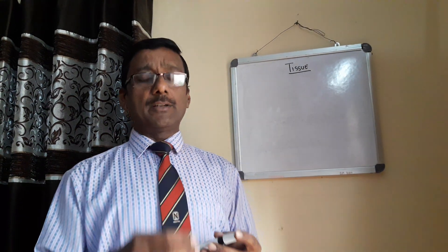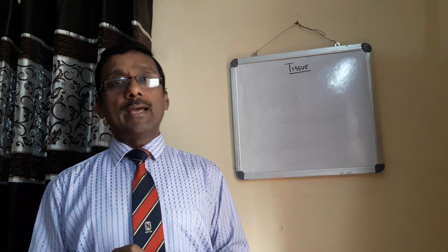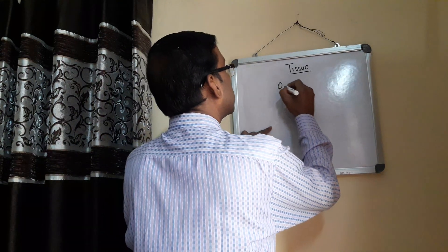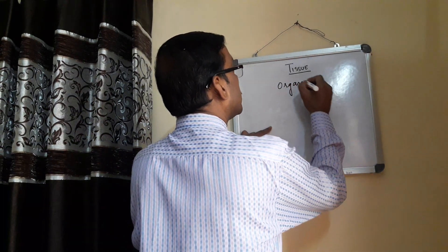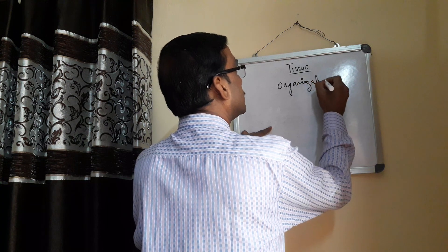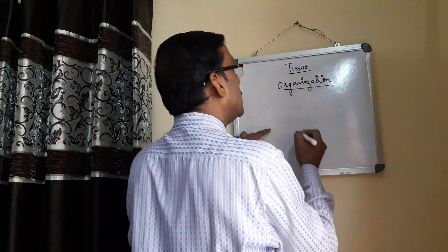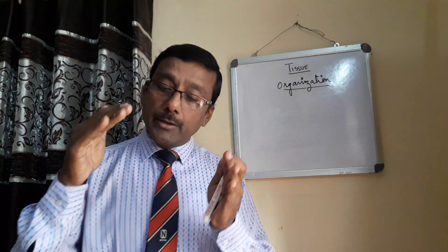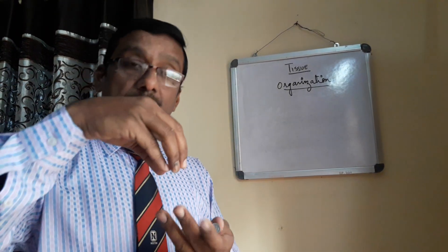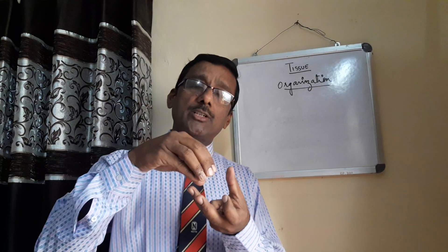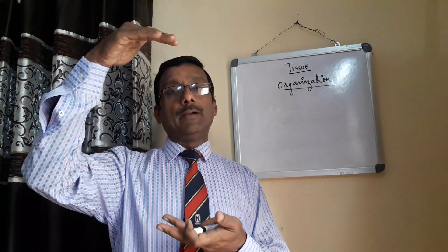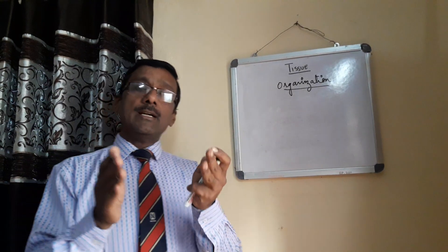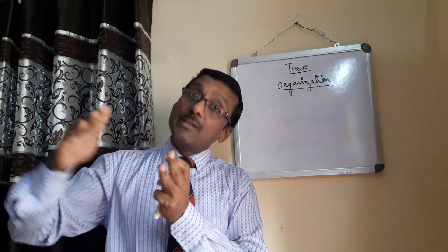Now these are the basic characteristics of living things. Before going further, let us understand a concept called organization. Organization means the manner in which smaller units are arranged from smaller to bigger. Organization means how you arrange the smaller units or smaller constituents into the bigger ones.